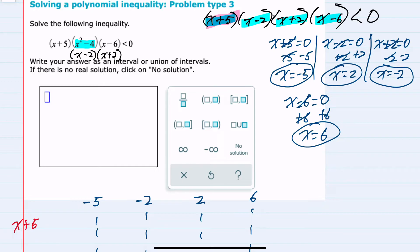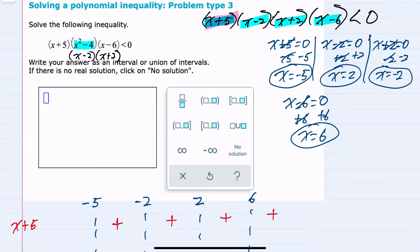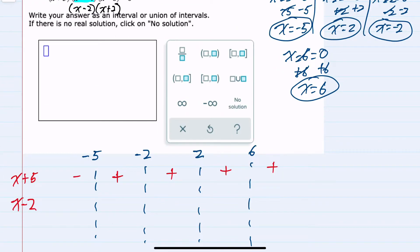So x plus 5 is our first factor. For any value larger than negative 5, x plus 5 would be positive. For any value less than negative 5, it would be negative. And then our next factor is x minus 2. For any value greater than 2, this would be positive. For any value less than 2, it would be negative.